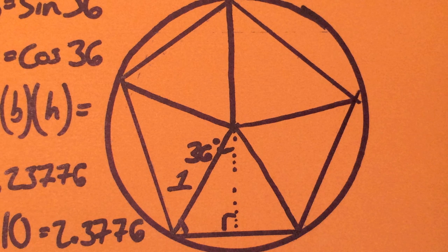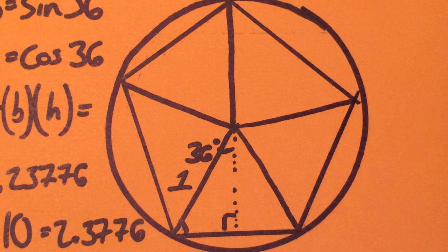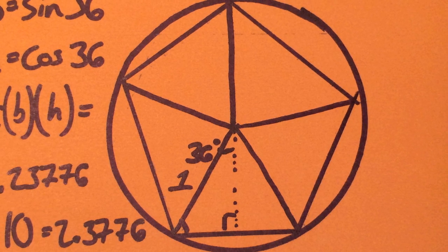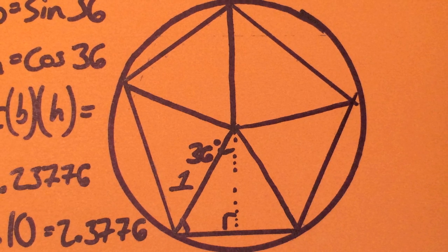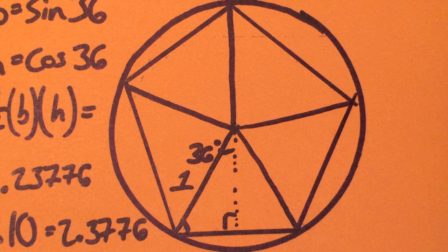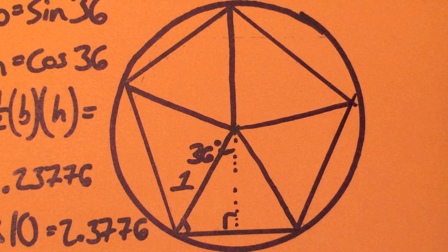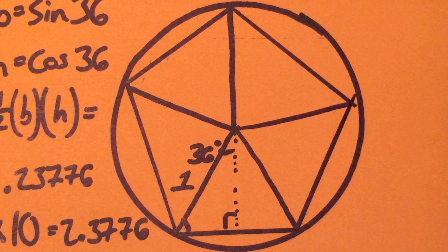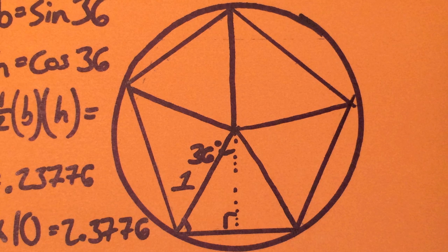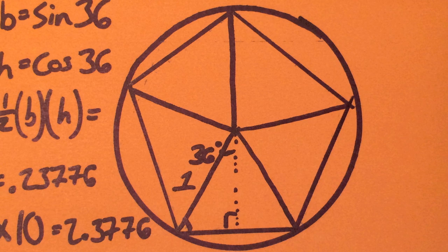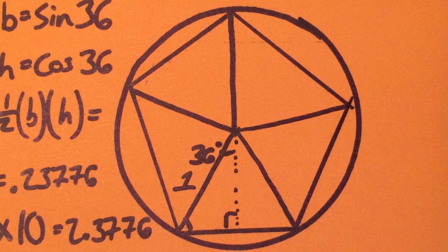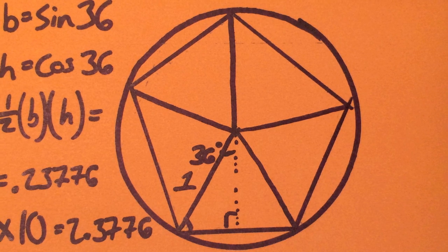From here, you will notice a pattern. First create an equal amount of triangles as sides of the polygon, then create a right angle in one of the triangles. By dividing 360 degrees by double the amount of sides, one can discover the angle for the right triangle created. Then use sine and cosine to find side lengths, plugging those into the area formula one half base times height, as seen in the last two examples.